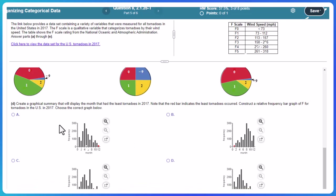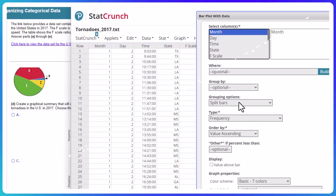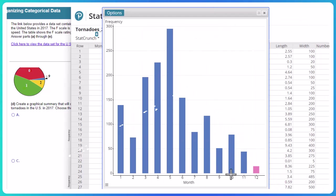Create a graphical summary that will display the month that had the least tornadoes in 2017. The red bar indicates the least tornadoes occurred. Construct a relative frequency bar graph of F for the tornadoes in 2017 and choose the correct graph below. And so I went to graph, bar plot, with data, and selected month. And then just press compute. And there we go.